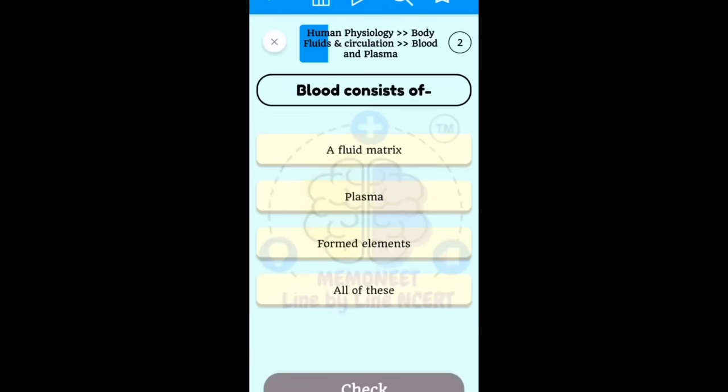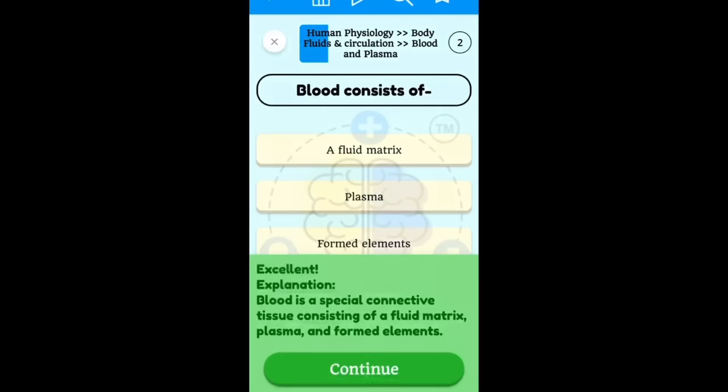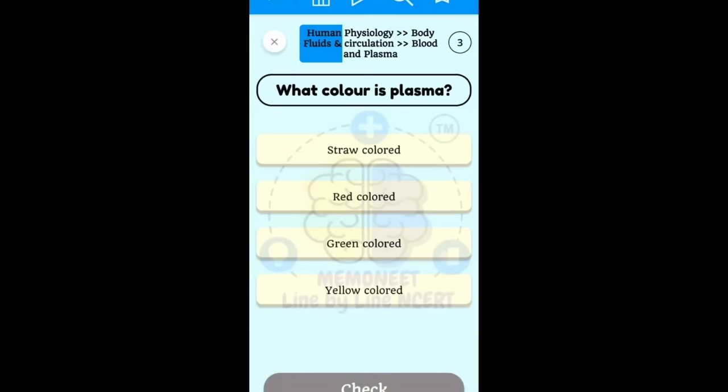Blood consists of - so we saw that line of NCERT clearly mentioned that blood consists of fluid matrix, plasma and formed element. So answer here will be all of these. So this way you can actually practice your NCERT and how much knowledge of your NCERT is there in the form of MCQs. So again, really good app recommended for everyone.